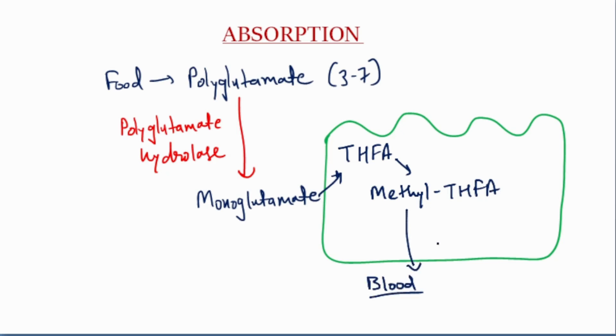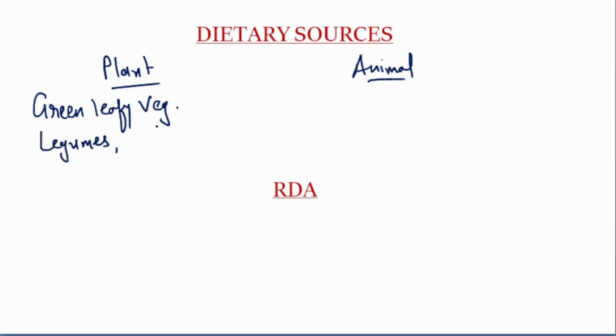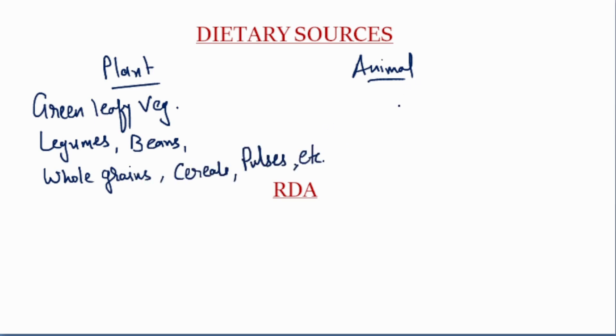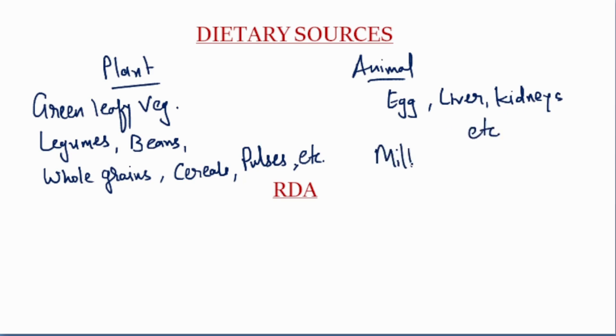The circulatory form of folic acid is methyl tetrahydrofolic acid. Dietary sources of folic acid include plant sources and animal sources. Plant sources include green leafy vegetables, legumes, beans, whole grains, cereals, pulses, etc. Animal sources include eggs and glandular organs like liver and kidneys. Milk is a poor source of folic acid.